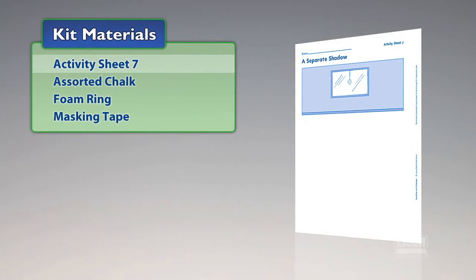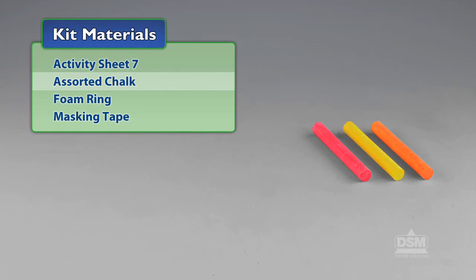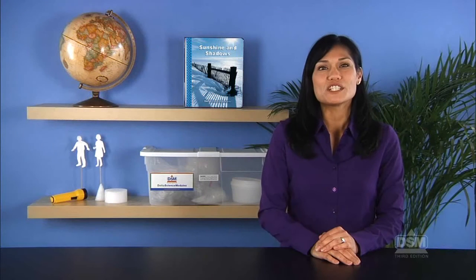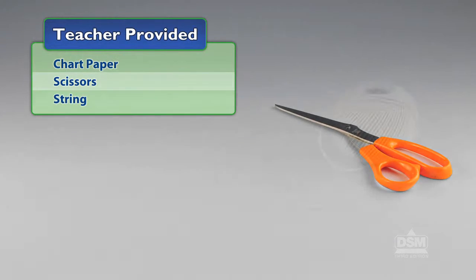You will need the following materials from the kit: Activity Sheet 7, Assorted Chalk, Foam Ring, and Masking Tape. You will also need to provide Chart Paper, Scissors, and String.